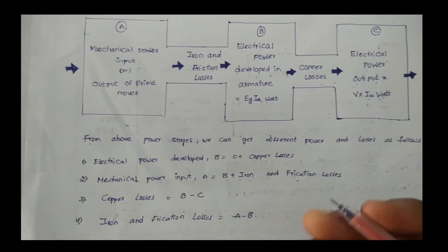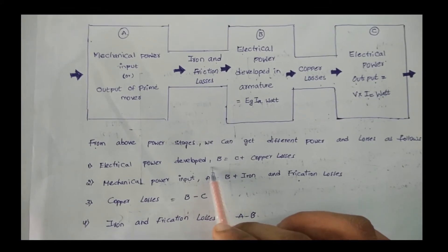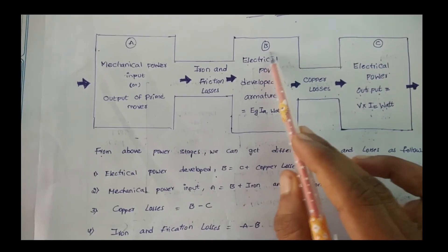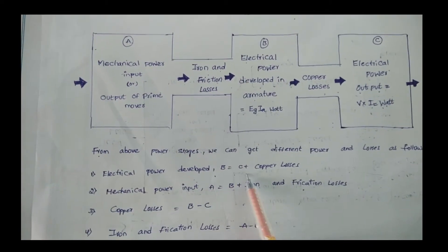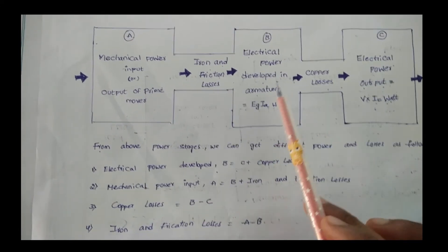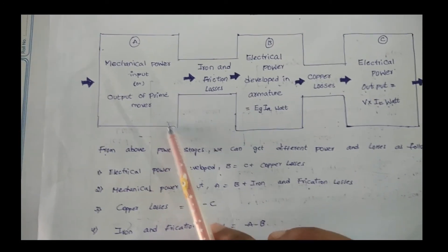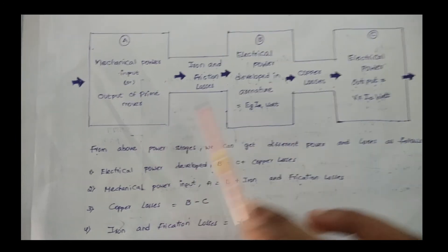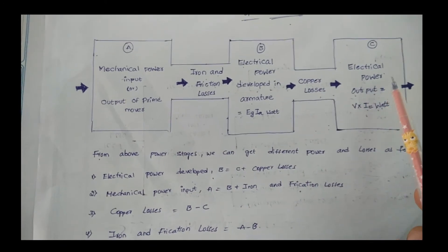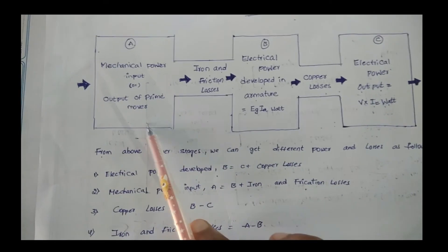The electrical power developed in the armature, represented as B, equals C plus copper losses — that is, the output plus copper losses. The mechanical power input is obtained by adding the electrical power developed in the armature and the iron and friction losses.